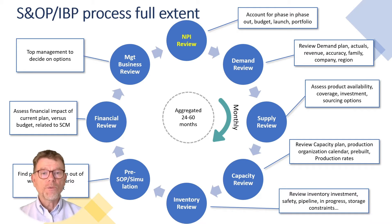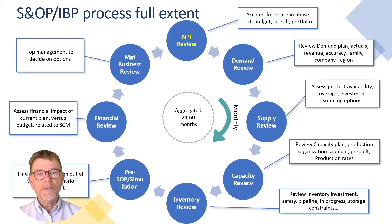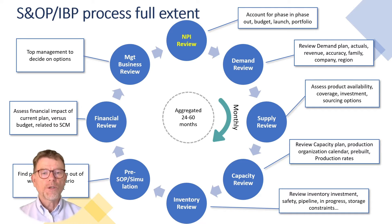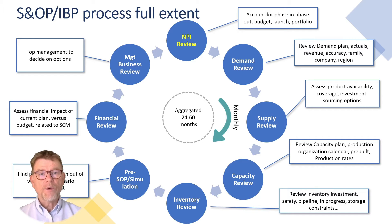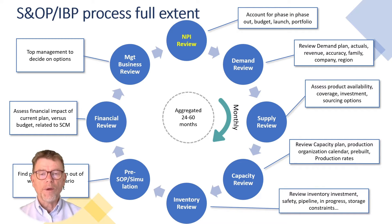The next one is capacity review. Can the factory cover the production requirements? Is there any issue with machine breakdown or machine maintenance in the next 6, 8, 12, or 18 months — and shall we reproduce because of that? Then inventory review: we have availability on one end with supply review, but that availability is probably due to some inventory position currently in the company. Inventory also means how much do I invest in safety stock, pipe stocks, work in progress stocks, and so on.